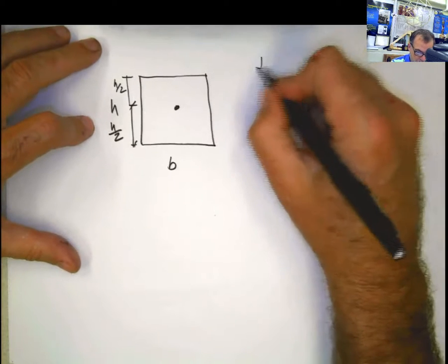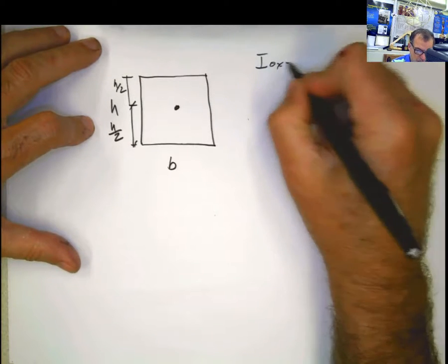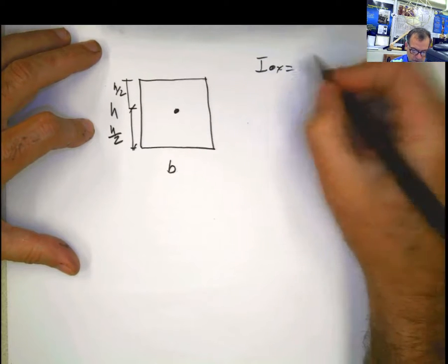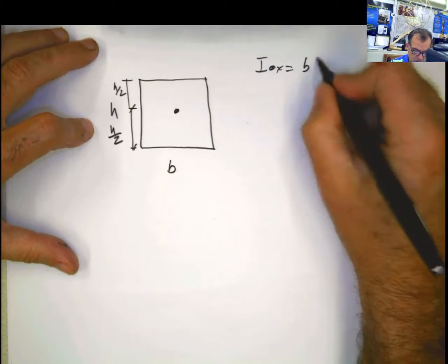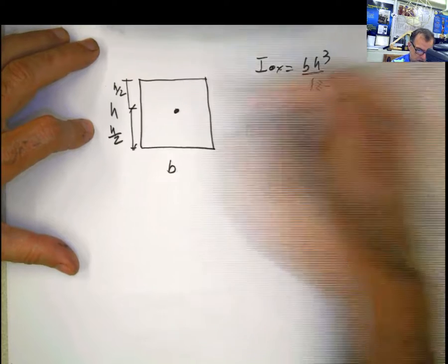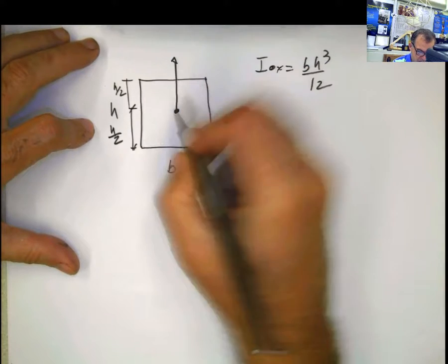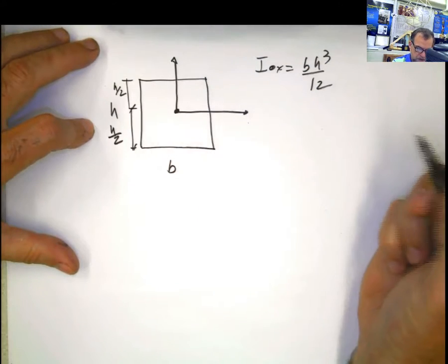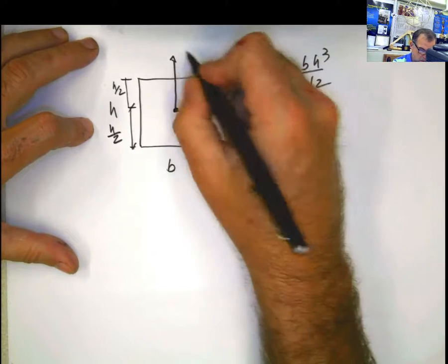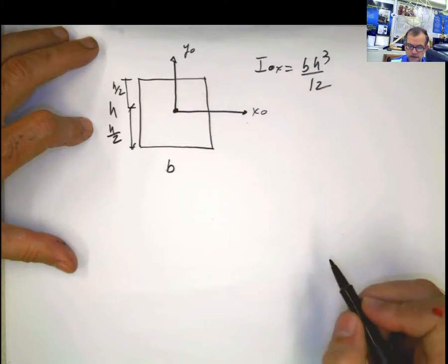The moment of inertia that we calculated with respect to the centroidal axis with respect to x, it was bh cubed divided by 12. That means that if we have a set of axes here, x0, y0, that was the moment of inertia with respect to the centroid.